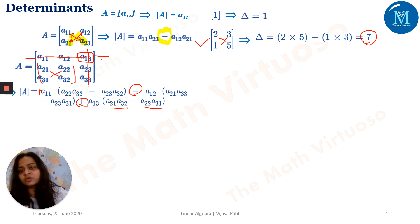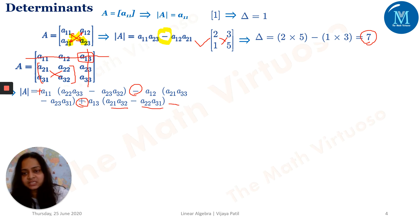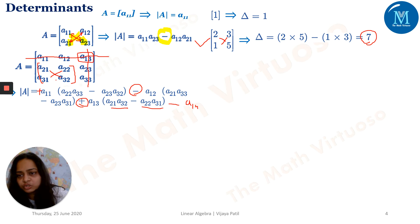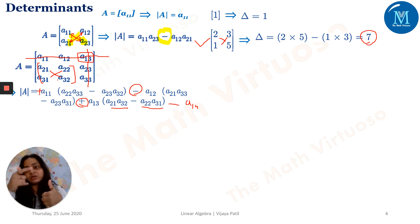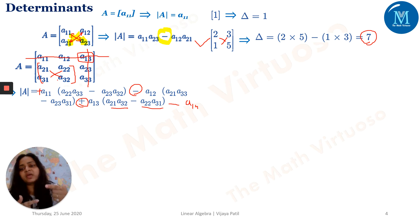Now, if my matrix is of order 4×4, the next element would have a minus sign because the pattern is plus, minus, plus, minus. My next element would be A14, and at that point the 2×2 matrices would be extended to 3×3. So you should have thorough knowledge of the 2×2 matrix determinant to find a 3×3 determinant, and knowledge of 3×3 to find a 4×4 matrix determinant.